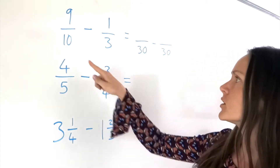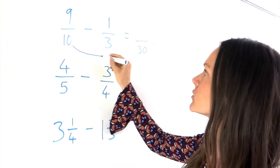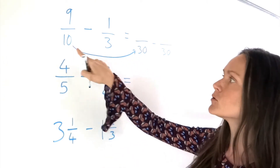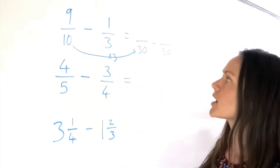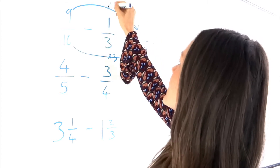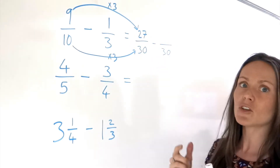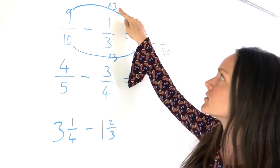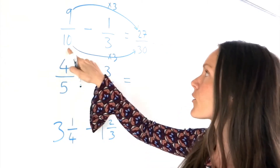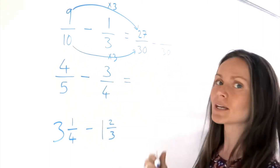We're not allowed to just change the denominator without changing the numerator. To get from 10 to 30, I have to multiply 10 by 3, so I'm going to do the same thing with the numerator — multiply that 9 by 3 as well. So 9 multiplied by 3 gives me 27. It's important that you multiply by the same number in both places, because that's how we find an equivalent fraction. These fractions are actually identical — we're just rewriting it so that we can subtract afterwards.